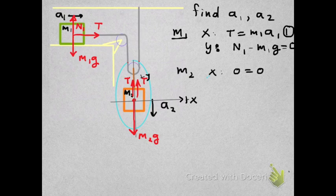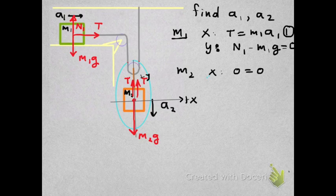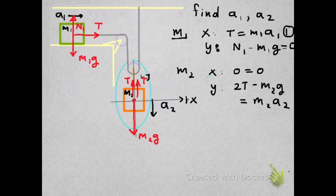For M2 in the x-direction, we have zero forces acting in the x-direction equals zero acceleration in the x-direction. Not a very interesting equation. In the y-direction, we have 2T acting upward, so positive, minus the weight of the block. And that should be equal to M2 times its acceleration.